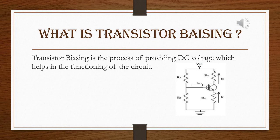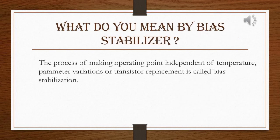What do you mean by bias stabilizer? The process of making the operating point independent of temperature, parameter variations, or transistor replacement is called bias stabilization.